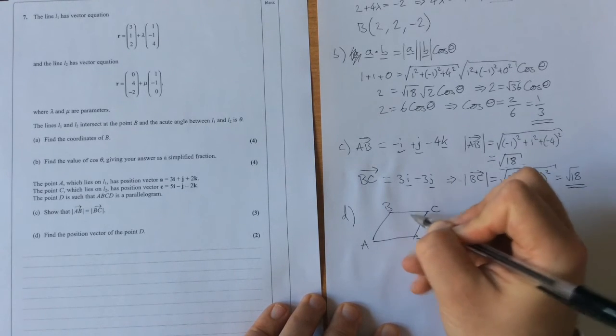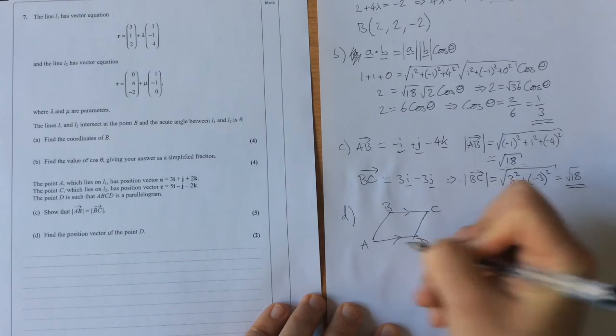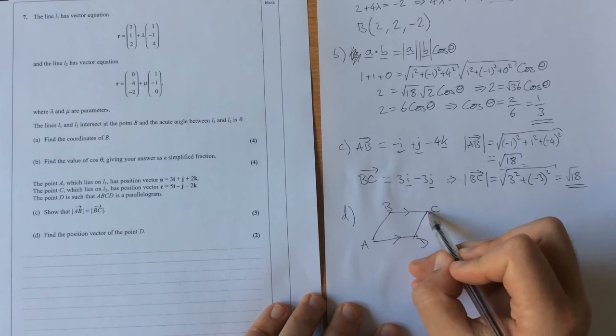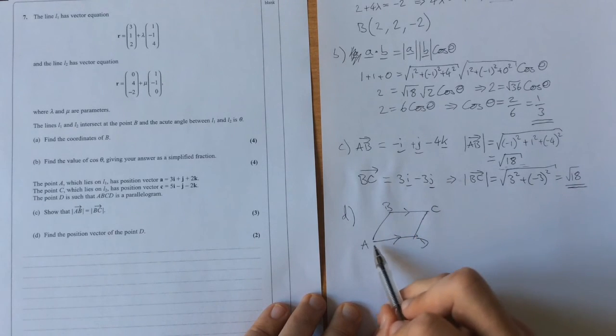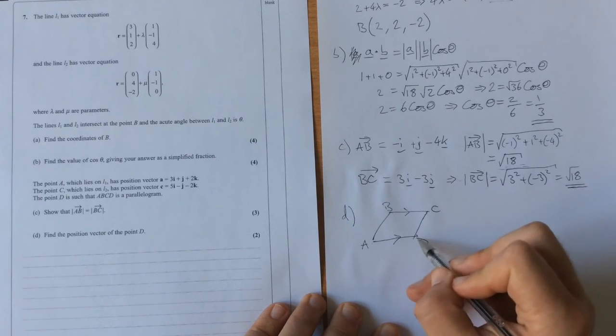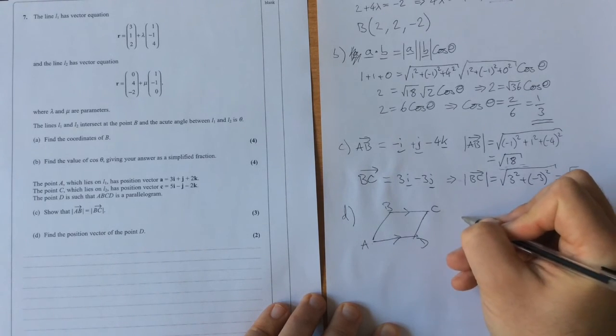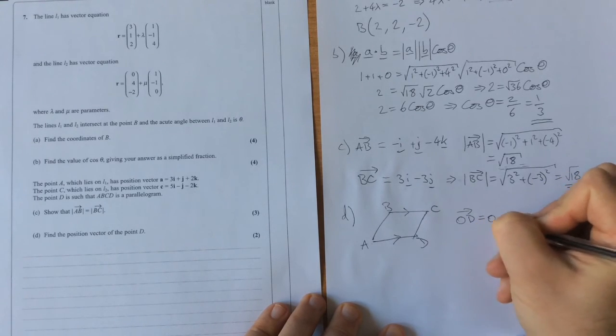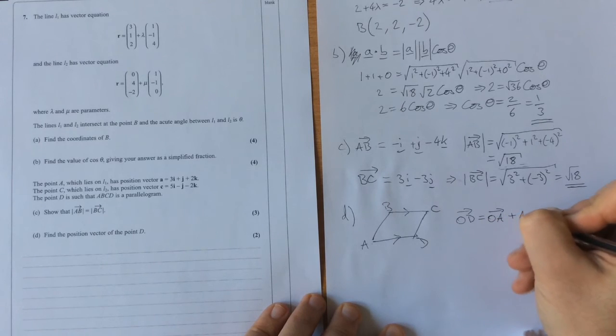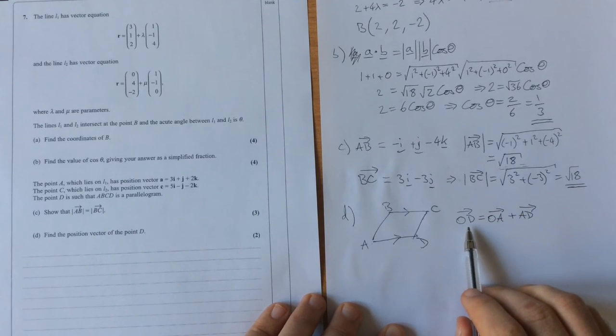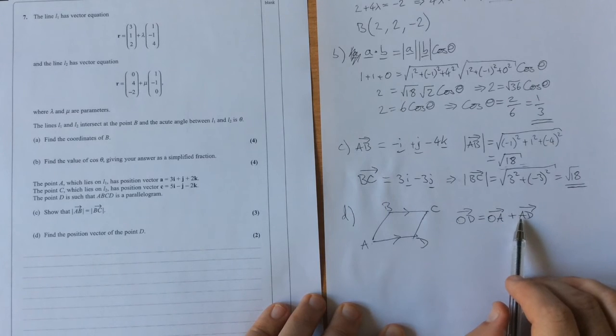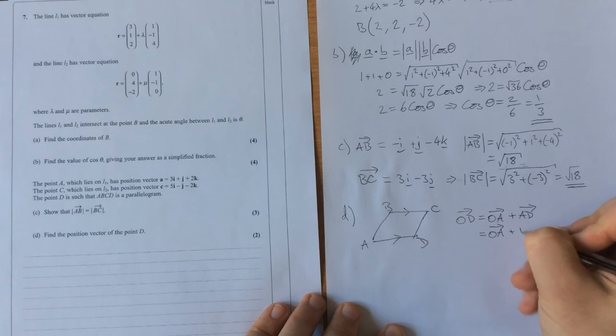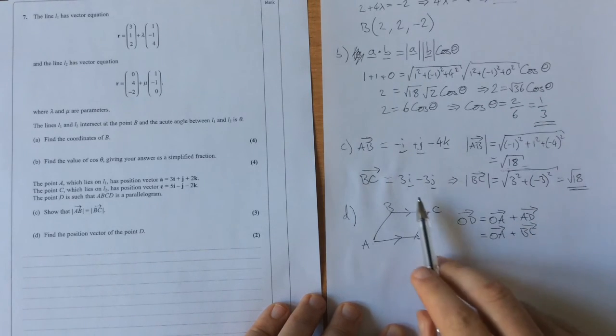What we know is that this vector must be the same as this vector. So what that means is the vector bc, which we've got there, must be the same as the vector from a to d. So in order to find the position vector for d, od is equal to oa plus ad. That is to say, to get to d, we go to a, and then we travel along this vector ad. But of course, ad is the same as bc, and we know what bc is because we've got it here.